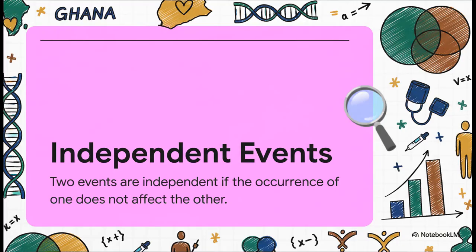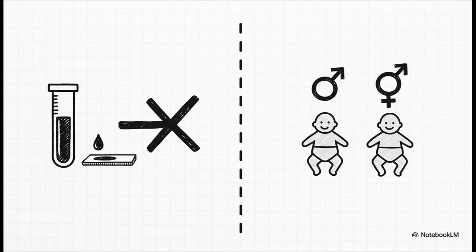Let's start with independent events. Think of them like two complete strangers passing on the street. They might be in the same place at the same time, but they have zero influence on each other. Knowing about one tells you absolutely nothing about the other.